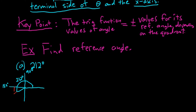The reference angle is the positive acute angle made with the terminal side of theta — here theta is 212 — and the x-axis. So it's this little positive angle here. The difference between 212 and 180 is 32 degrees, so the reference angle is 32 degrees.